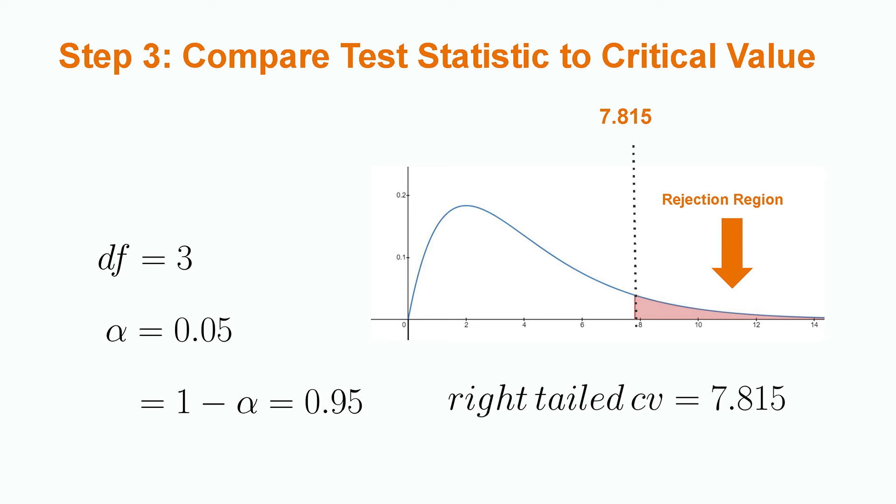Note that these tests are always right-tailed because in the calculation of a test statistic, we square our values, making it impossible to obtain negative values. The p-value approach can also be used but it is outside the scope of this lesson.